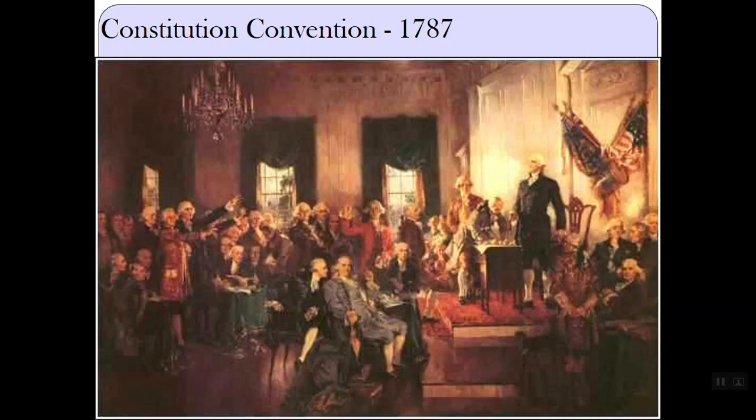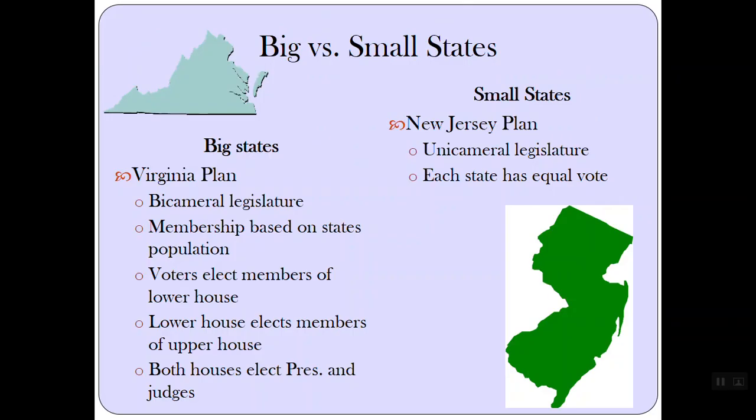Let's look at some of the decisions that came from the convention. Everyone was to propose different compromises or proposals on how the government would work. One of those issues was representation — how were the people going to be represented in this new government? The Virginia Plan was considered the big state plan. It suggested a bicameral legislature where membership would be based on the state's population. Voters would elect members of the lower house, the lower house would elect the upper house, and both houses would elect the president and judges. This is very similar to a parliamentary system.